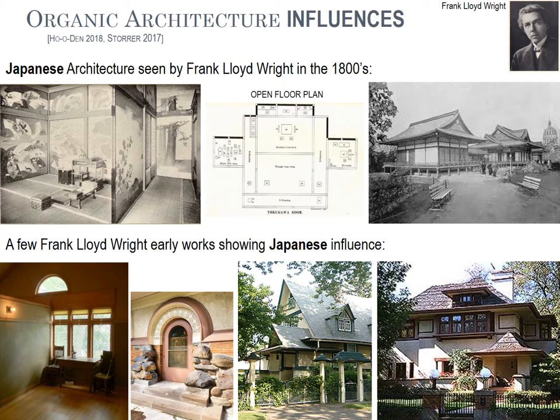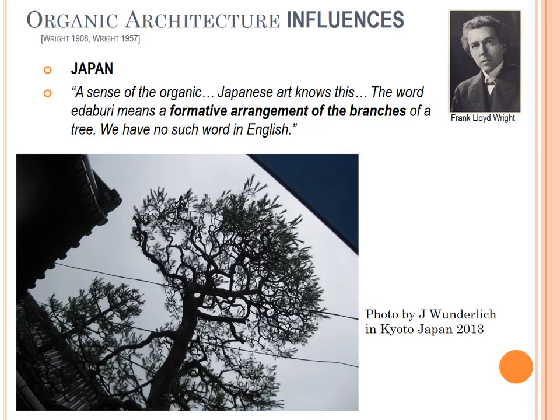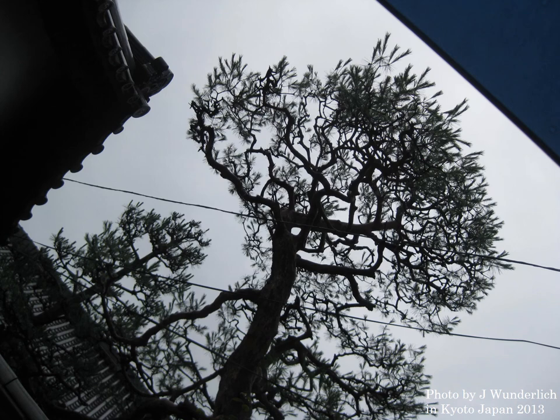You can see some of the influences in what he saw in the pavilion at the World's Fair and in his own designs. He goes on to say that Japanese art understands the sense of the organic. The word Edebori means a formative arrangement of the branches of a tree — we have no such word in English. Here's a picture taken in Kyoto of a tree. You can certainly see with bonsai trees how they train the branches and guide them — some bonsai trees are actually hundreds of years old.